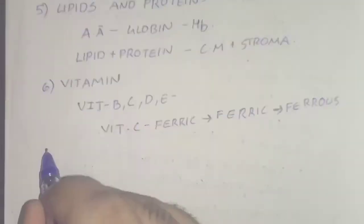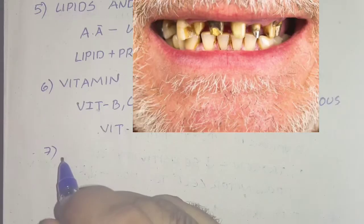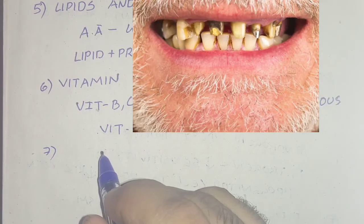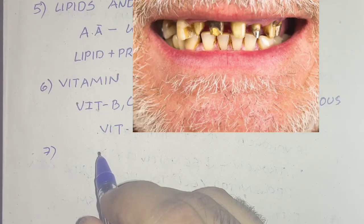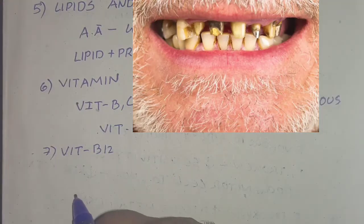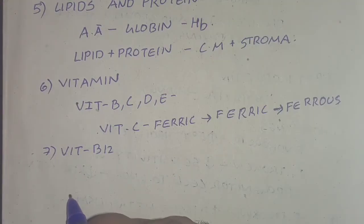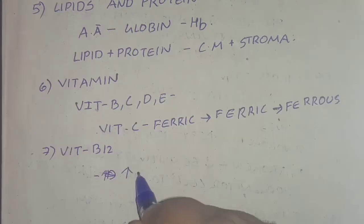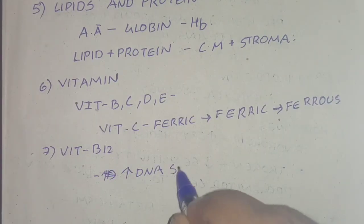Vitamins include vitamins B, C, D, and E, which are necessary for normal erythropoiesis. Vitamin C helps the conversion of ferric to ferrous ions and is necessary for the facilitation of iron turnover in the body. In scurvy, anemia is a feature.